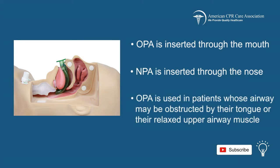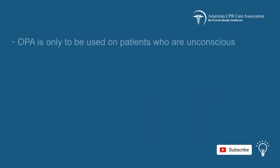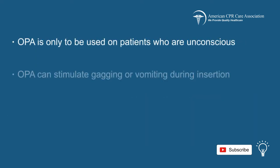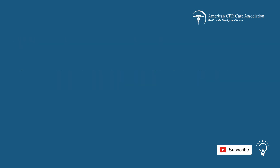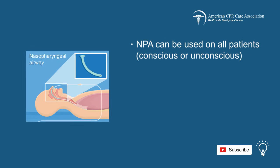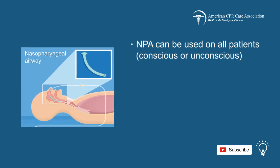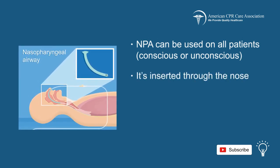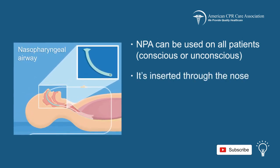The OPA is used in patients whose airway may be obstructed by their tongue or their relaxed upper airway muscles. The OPA is only to be used on patients who are unconscious, as the OPA can stimulate gagging or vomiting as it is inserted. The NPA, on the other hand, can be used on all patients — conscious or unconscious — as it is inserted through the nose and does not provoke gagging.